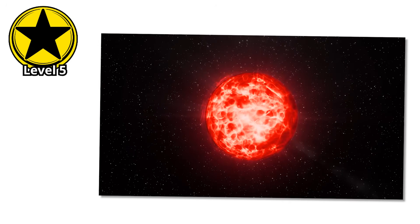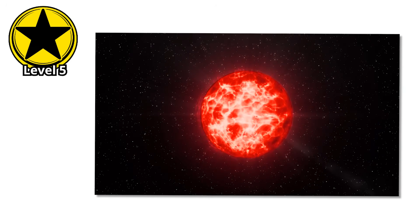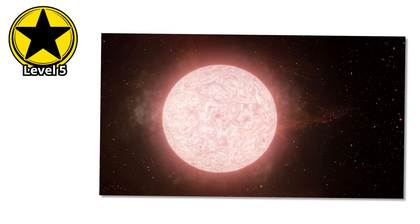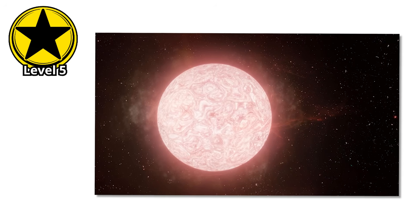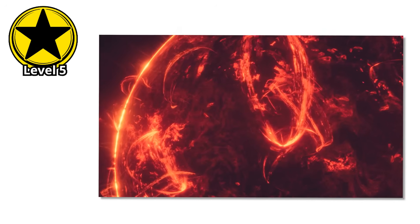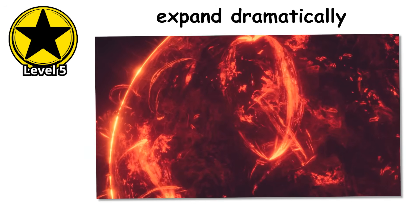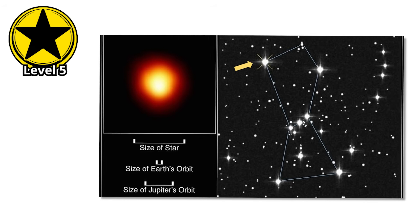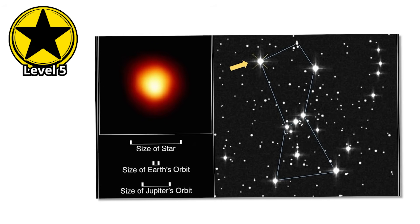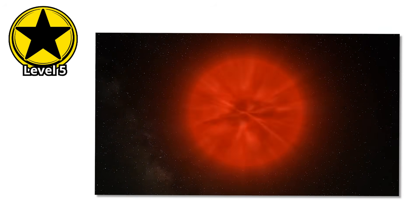Red supergiants form when massive stars exhaust the hydrogen in their cores and begin fusing heavier elements. The core contracts and heats up, but the outer layers expand dramatically, cooling as they spread out into space. The result is a star that's enormous in volume but relatively cool in temperature, glowing red instead of blue or yellow.